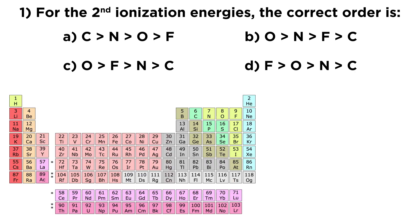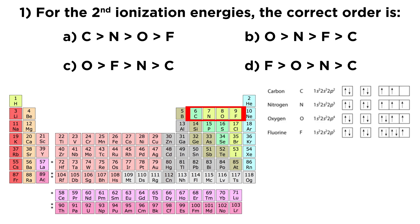Let's take a look at the first question. It will be useful to pull up the periodic table. Here is the block with carbon, nitrogen, oxygen, and fluorine. We know that ionization energy generally increases as we go to the right on a period, so our first instinct might be to choose D — fluorine greater than oxygen greater than nitrogen greater than carbon — because that obeys the general trend. But we don't want to go too fast; it will be a good idea to actually check out the orbital diagrams for these elements.